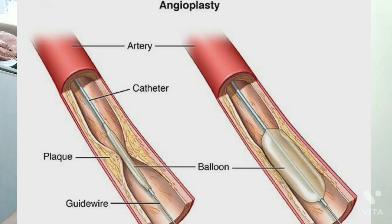We have to open the blockage in the coronary arteries which are narrowing, and we use the coronary angioplasty technique for this. In angioplasty, a balloon-type catheter is inserted inside the coronary arteries, and that balloon catheterization is used to open the blockage which is causing the narrowing.